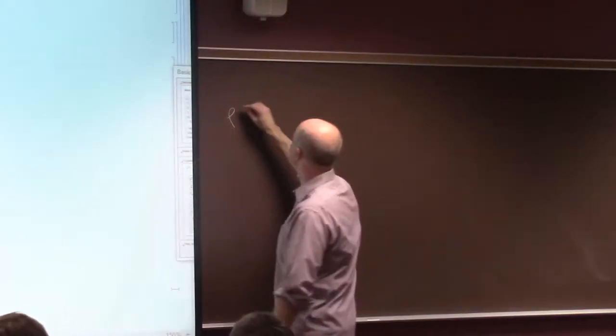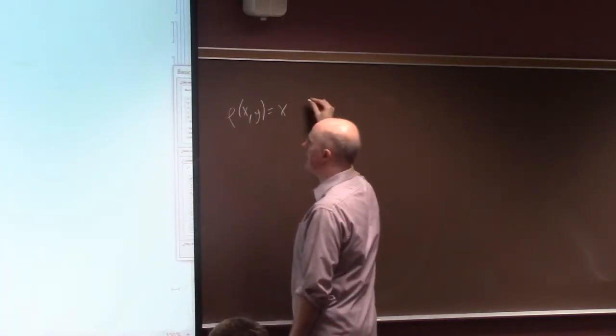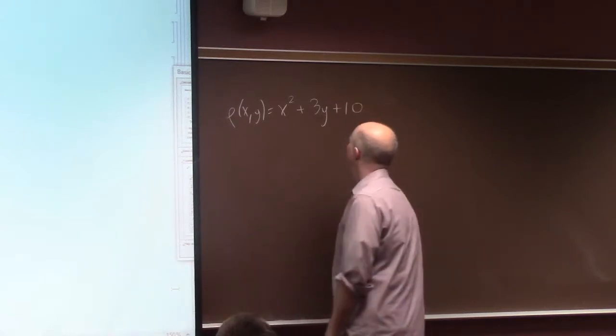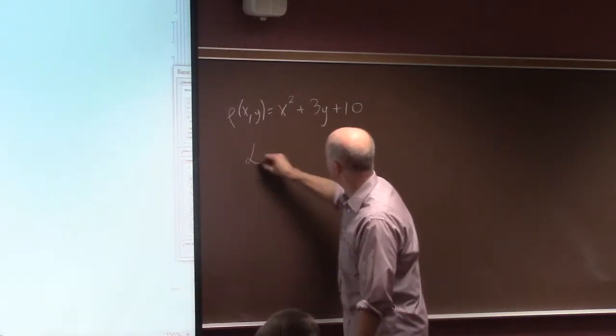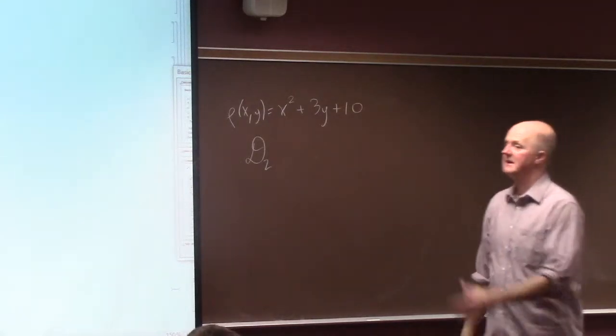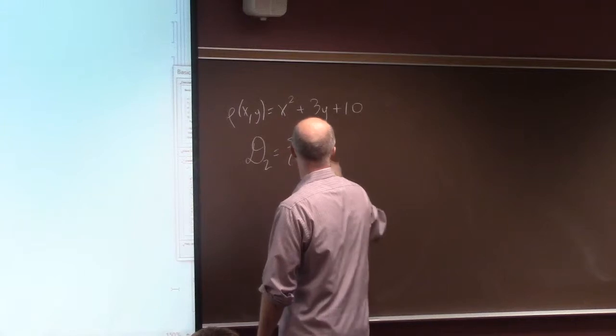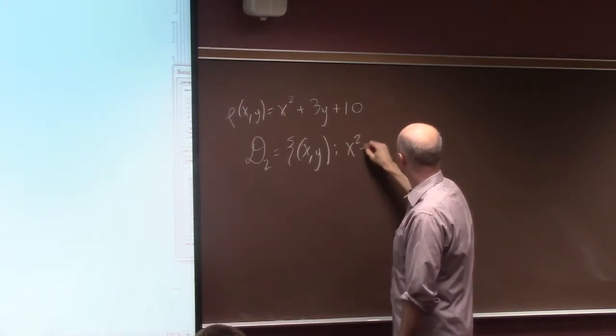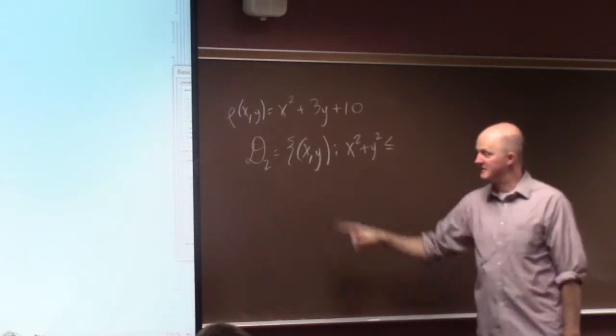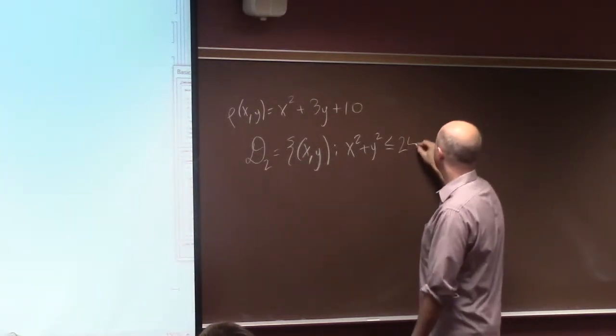We have a density function — a simpler one than we've been considering. I'll call it ρ (rho), a common letter for density. Let ρ(x,y) = x² + 3y + 10. The domain is the same disk D2 I considered previously — a disk of radius 5 centered at the origin, described by rectangular coordinates.